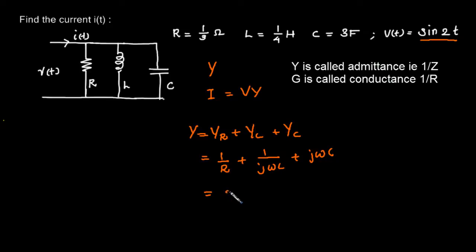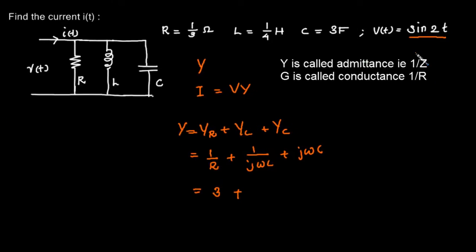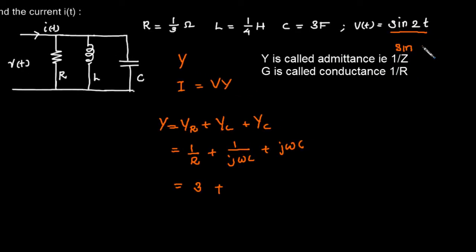1/R, its value is 3, plus what is the value of omega? If V(t) is sine 2t we can compare it with sine ωt. That means omega equal to 2 radians per second. Now coming back it will be 1/(2j)...